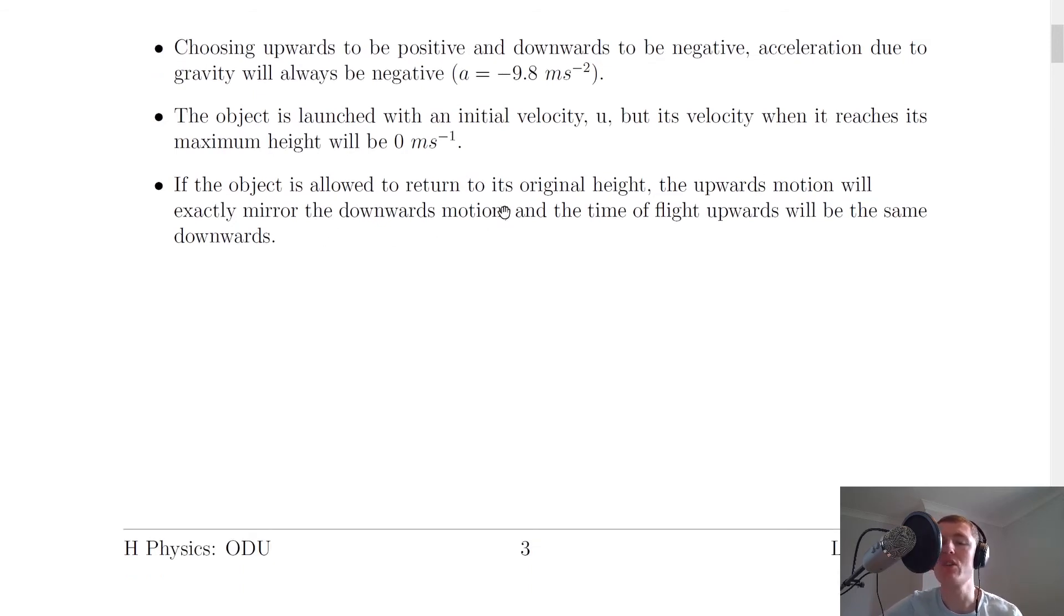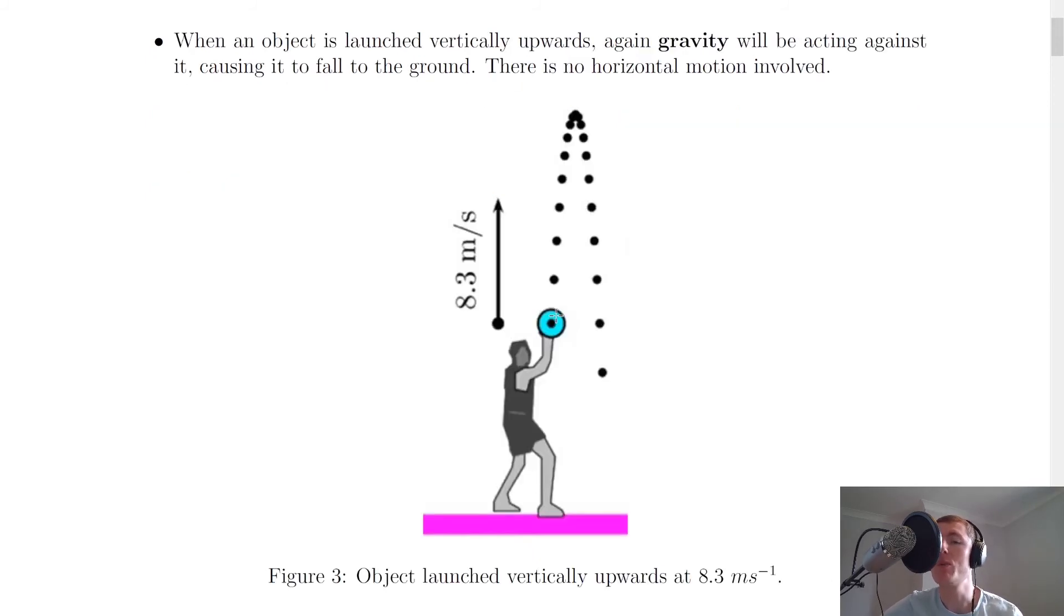If the object is allowed to return to its original height the upwards motion will exactly mirror the downwards motion and the time of flight upwards will be the same downwards. That's very useful if we're doing problems on this because we can use the fact that this motion down to here is going to be identical to the motion from here to here for the first half of its motion. We could use the idea that the time for the first half of the motion is going to be the same as the time for the second half of the motion assuming the object is going to reach the same point that it left from.